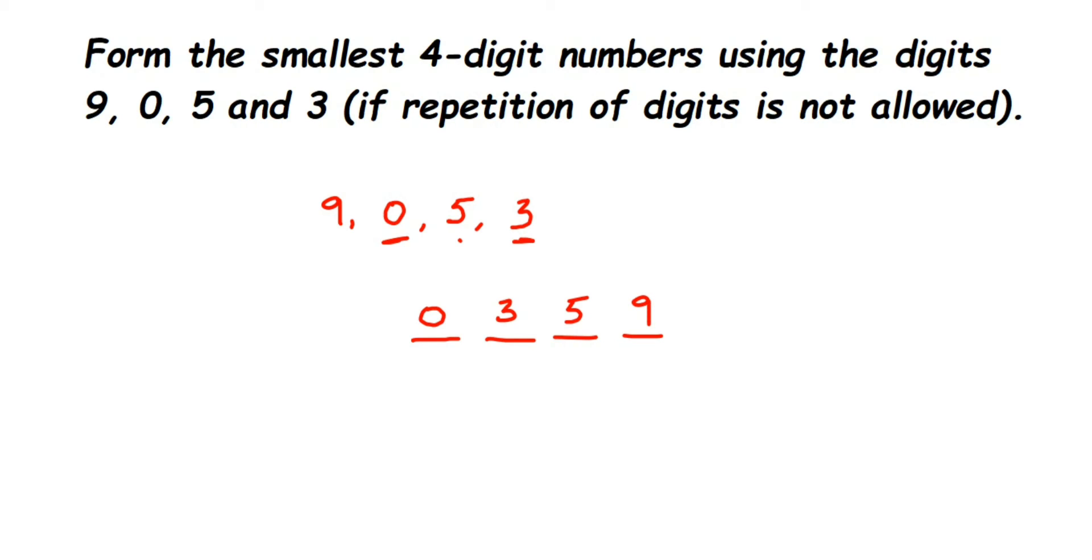But if you notice here, this number is not forming a four-digit number—it is forming a three-digit number. Why? Because there is zero in the beginning, at the start of the number. Zero has no value if it's at the beginning. The number is 359, but 359 is a three-digit number.